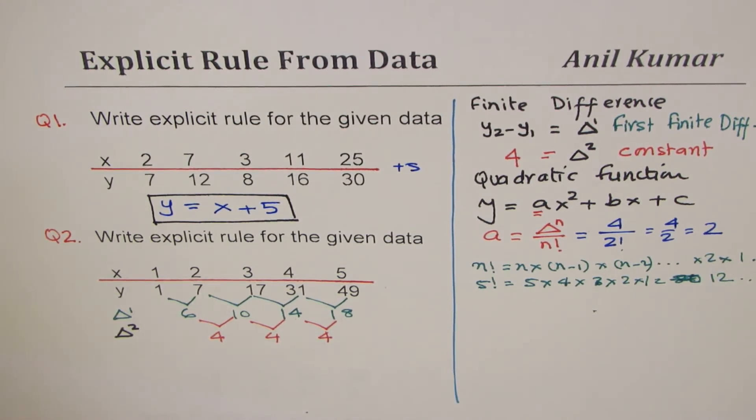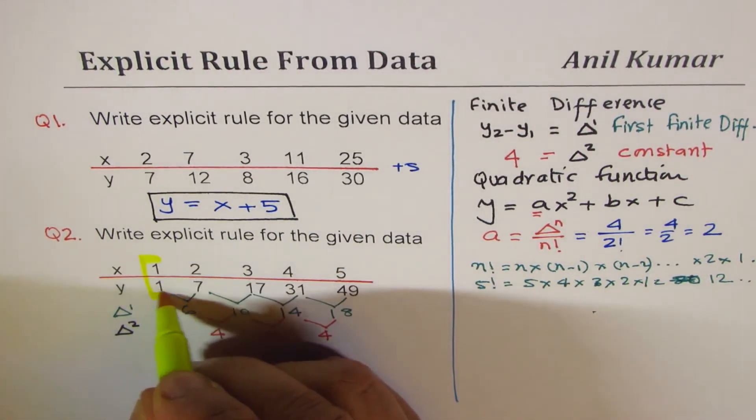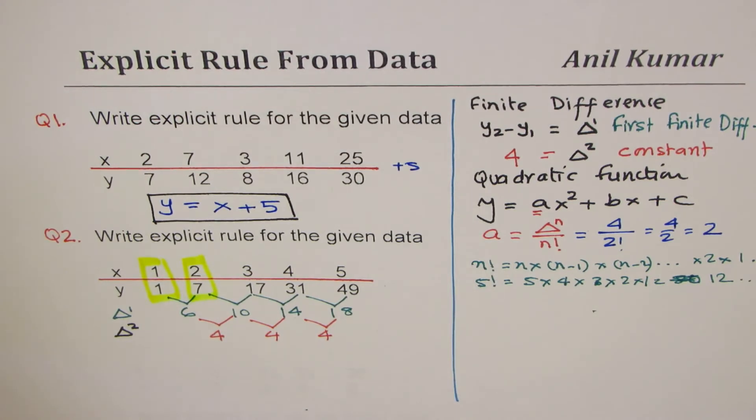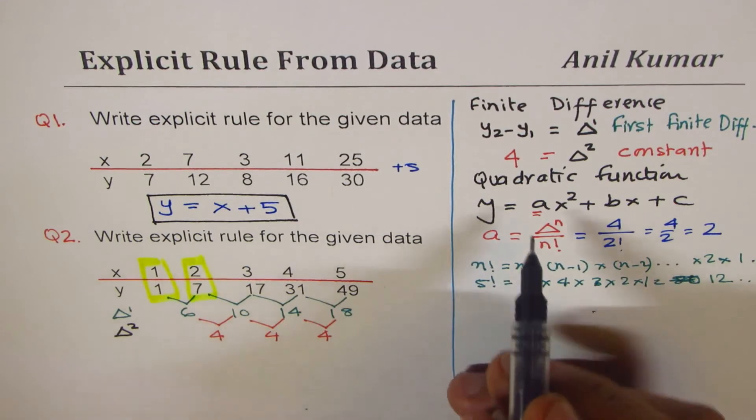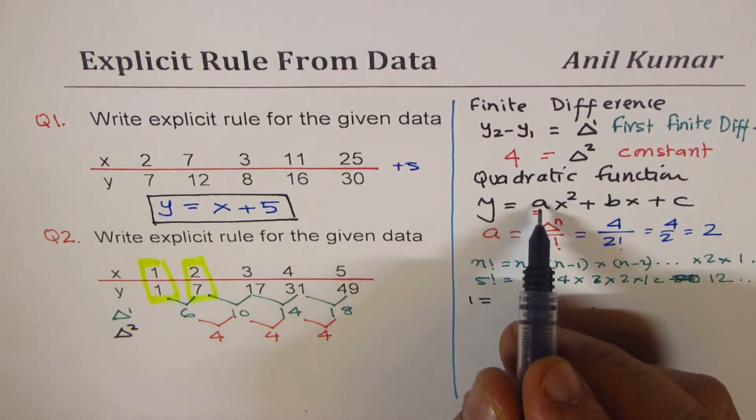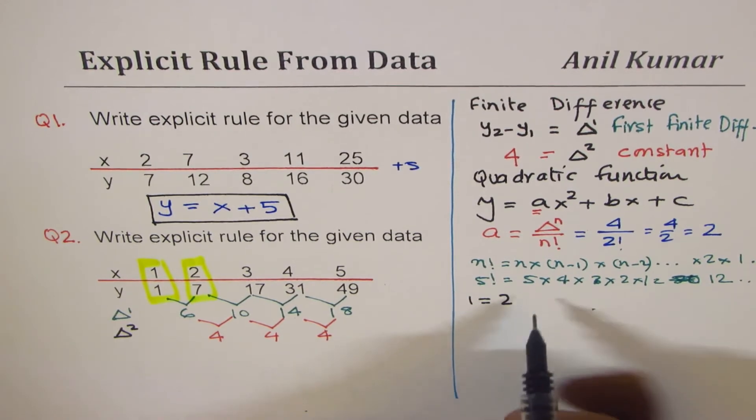Let's use the values 1, 1 and 2, 7. These are the 2 values which we will take to get 2 equations. So if I use 1 for y and 1 for x, my equation now becomes 1 equals 2 times 1 square plus b times 1 plus c.